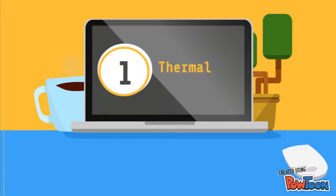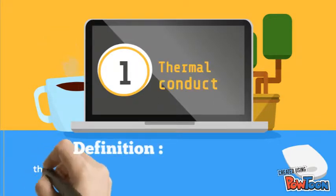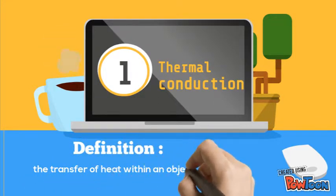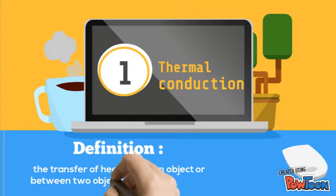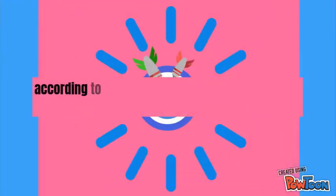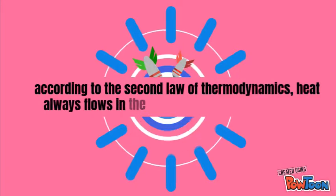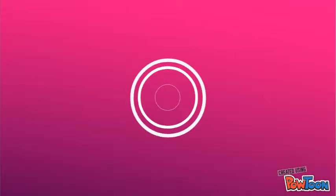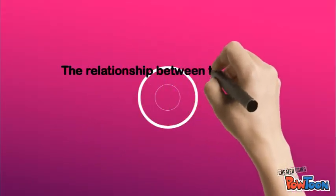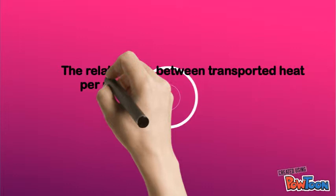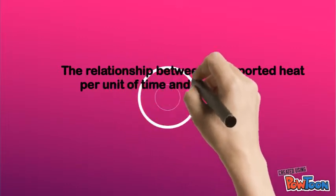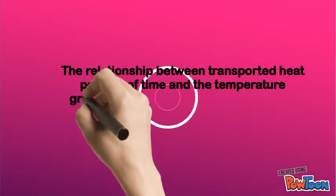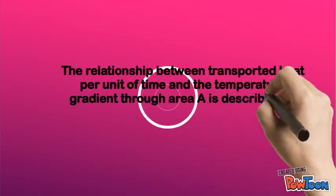Thermal conduction is the transfer of heat within an object or between two objects that are in contact. According to the second law of thermodynamics, heat always flows in the direction of lower temperature. The relationship between transported heat per unit of time and the temperature gradient through area A is described by thermal conductivity.